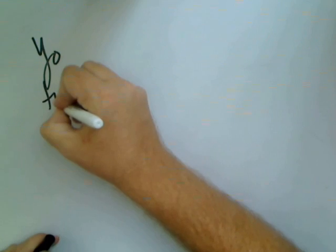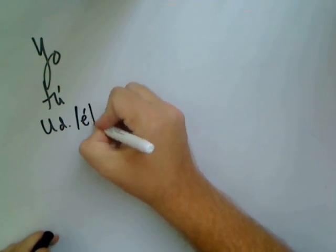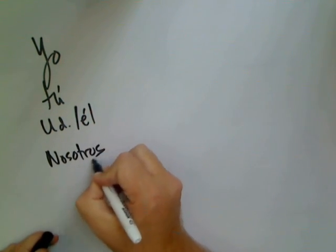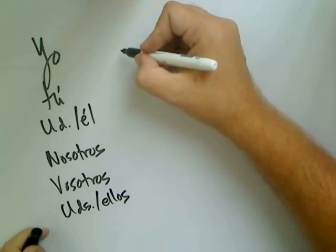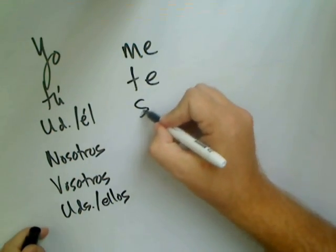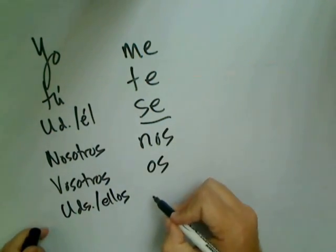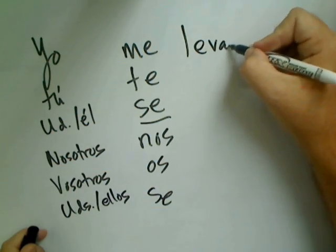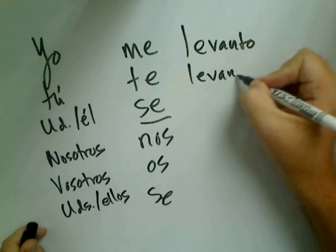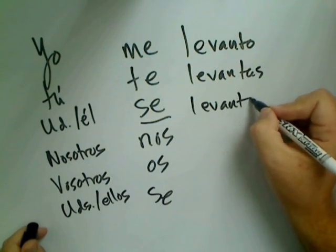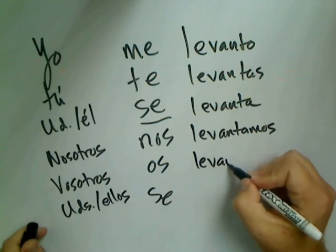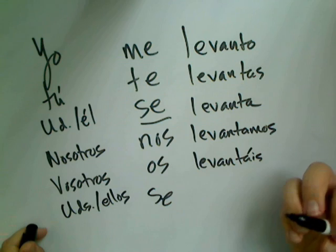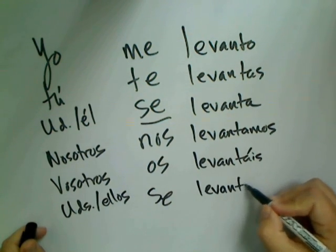We can see this clearly if we conjugate a reflexive verb in all subject positions in the present tense. For LEVANTARSE: ME LEVANTO, TE LEVANTAS, SE LEVANTA — he or she gets up — NOS LEVANTAMOS, OS LEVANTÁIS, and ELLOS/USTEDES/ELLAS SE LEVANTAN. When we're looking at third-person forms of reflexive verbs, we're going to have the particle SE introducing those forms.